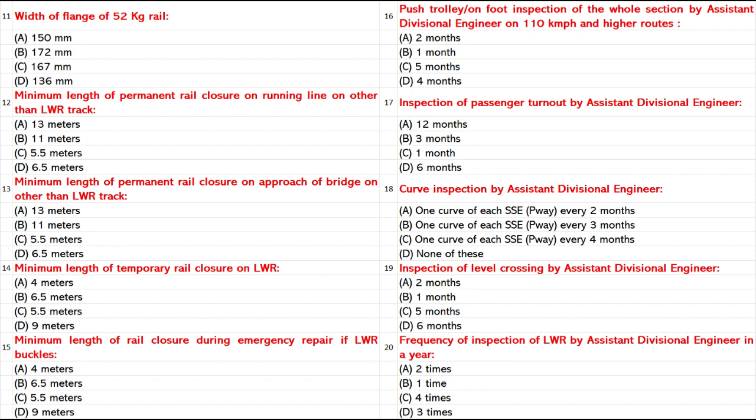Minimum Length of Temporary Rail Closure on LWR: A. 4 mm. B. 6.5 mm. C. 5.5 mm. D. 9 mm. Answer: A. 4 mm.